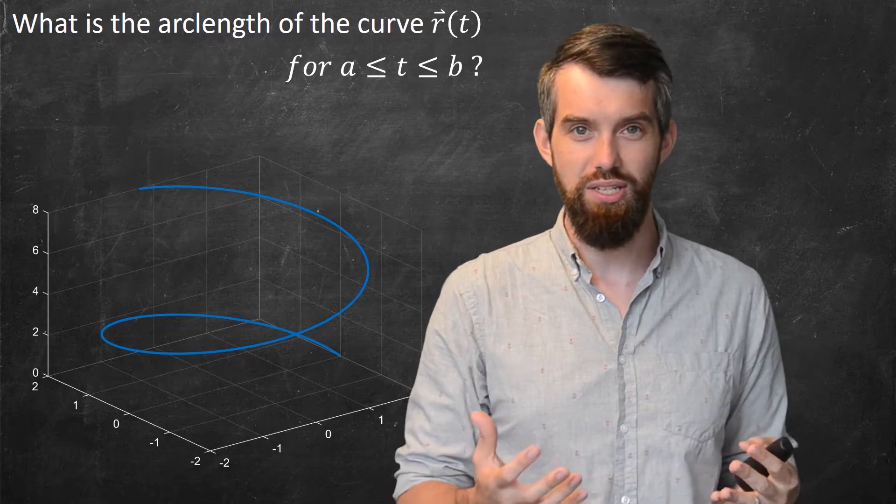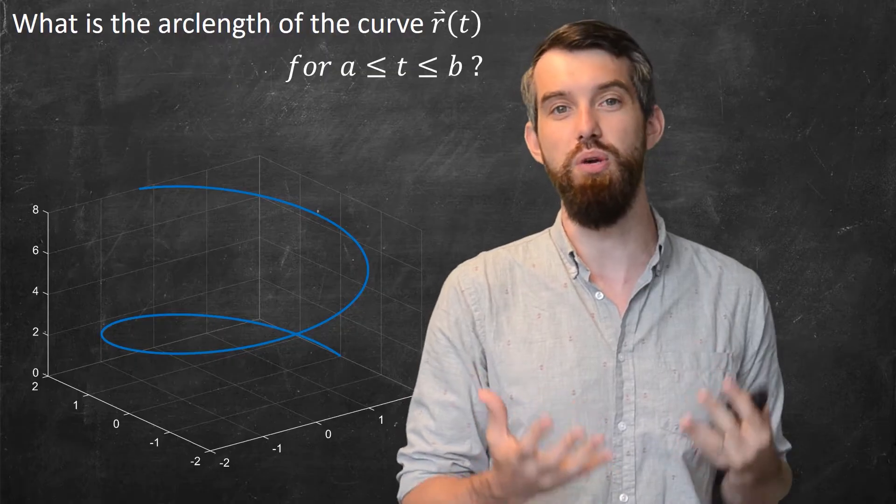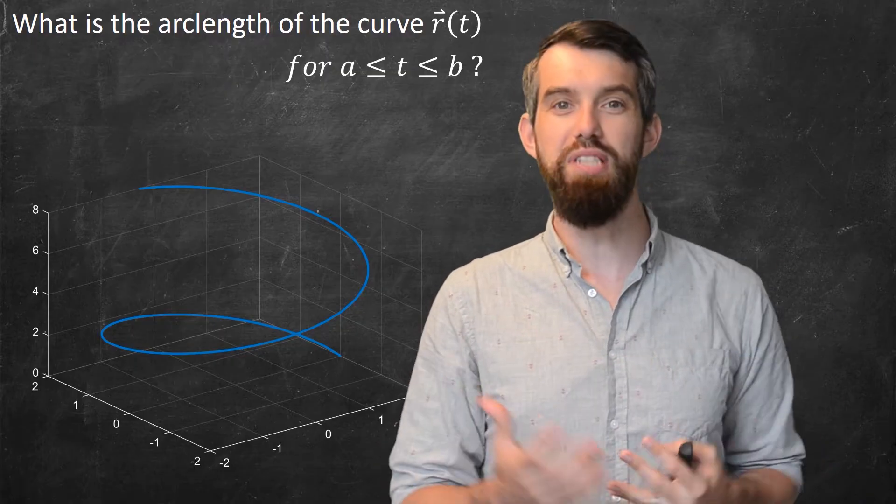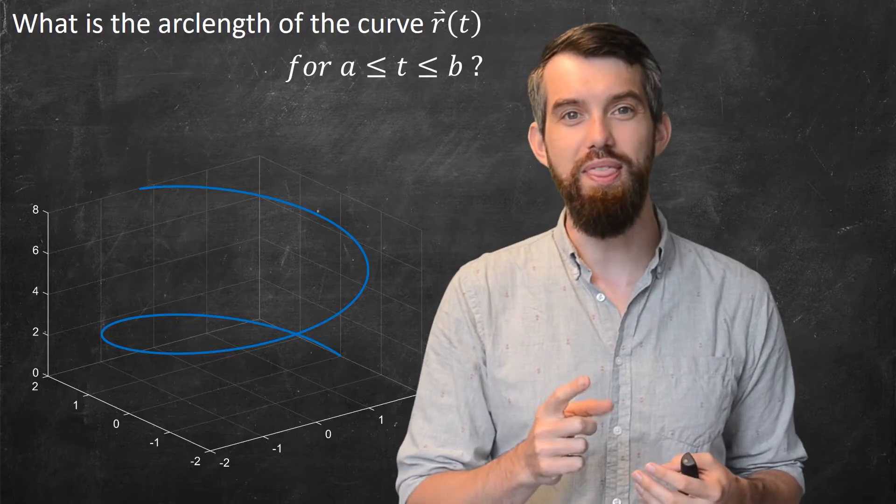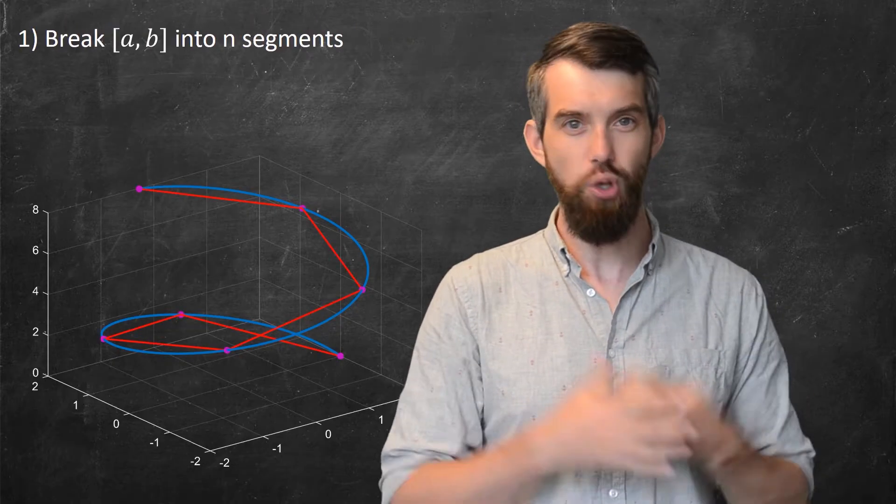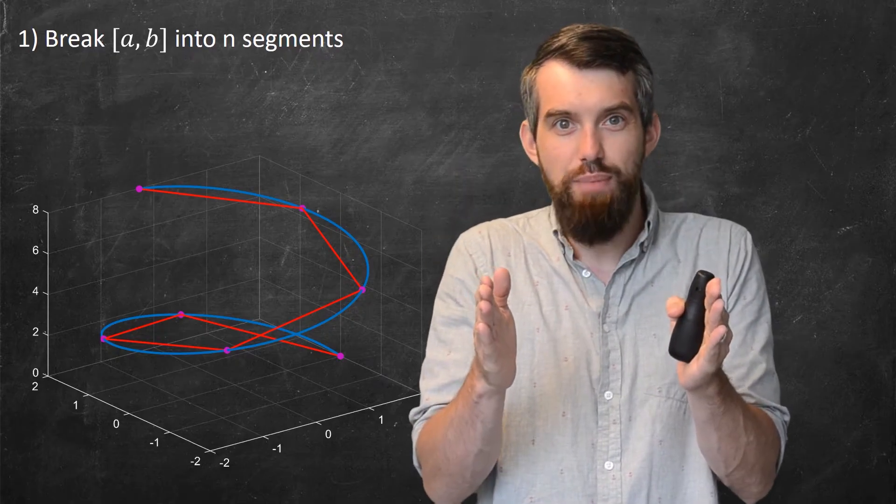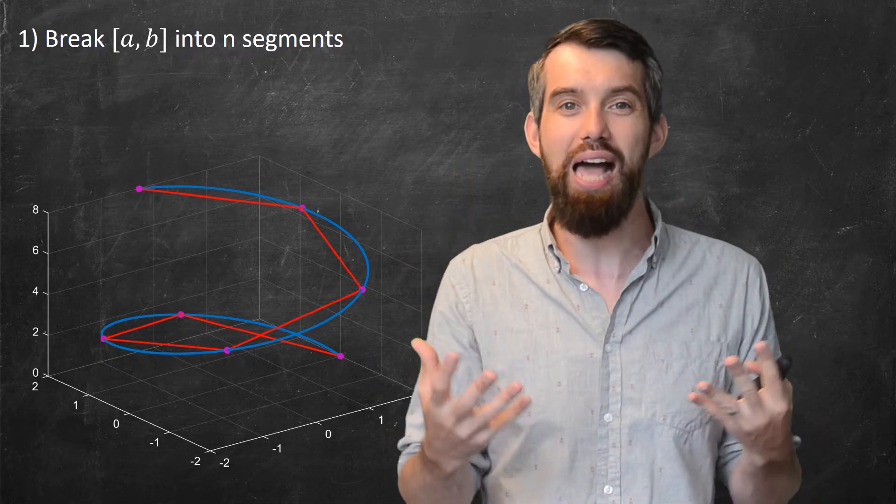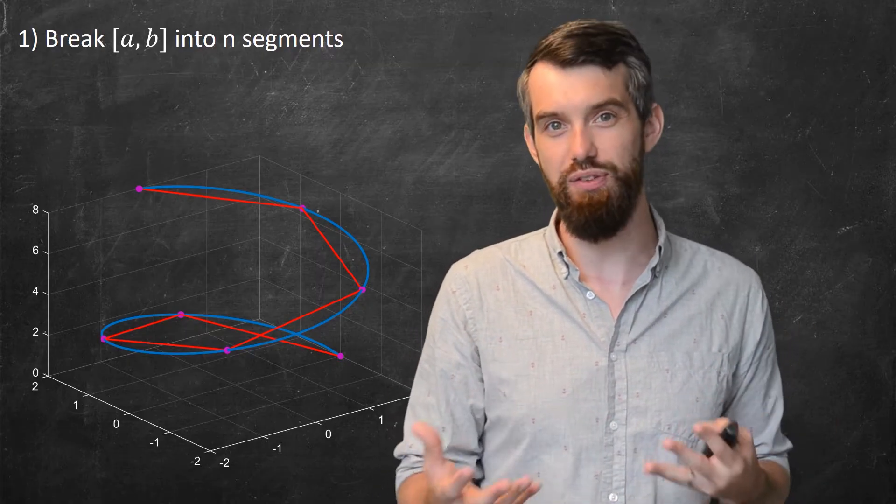But with calculus, as long as our curves are sufficiently nice and differentiable, then we're going to be able to compute their arc lengths. There's a couple steps in this process, and the first of them is to approximate this with straight lines. So what I'm going to do is, I'm going to take that a to b interval, and I'm going to break it up into n equal size segments.